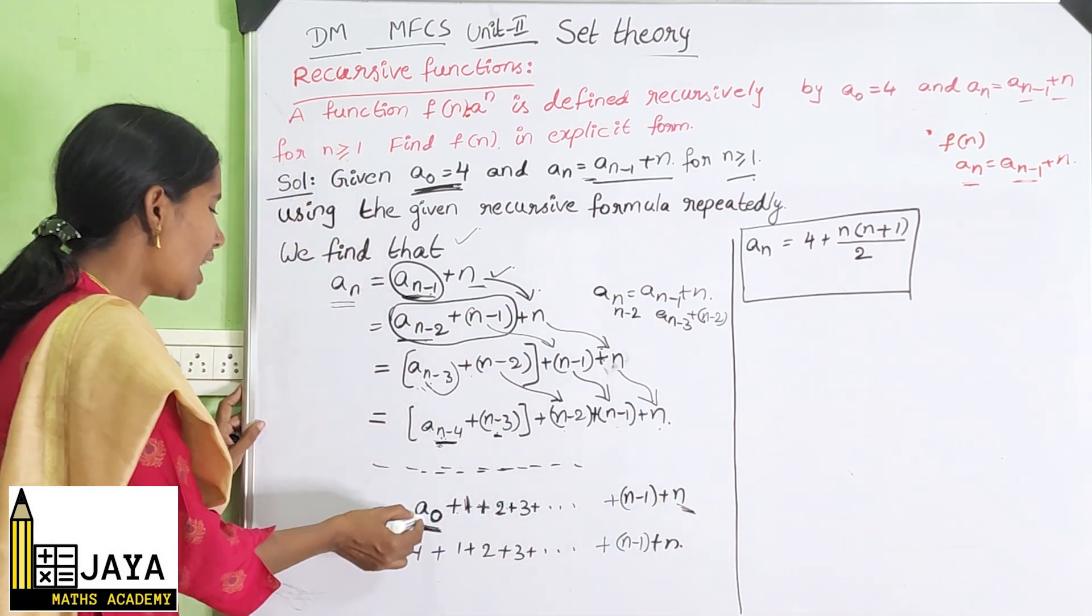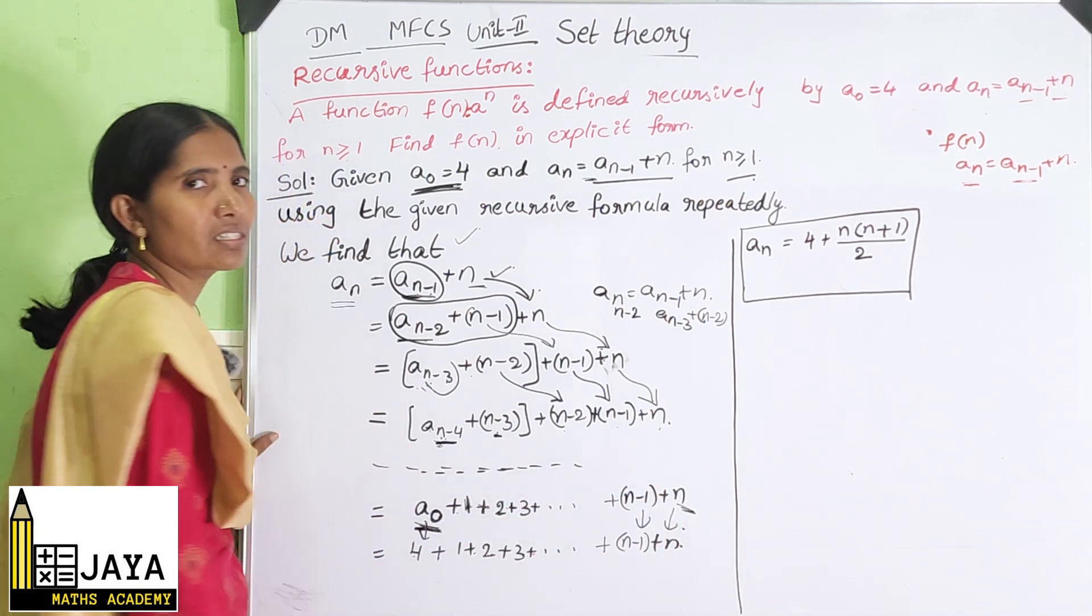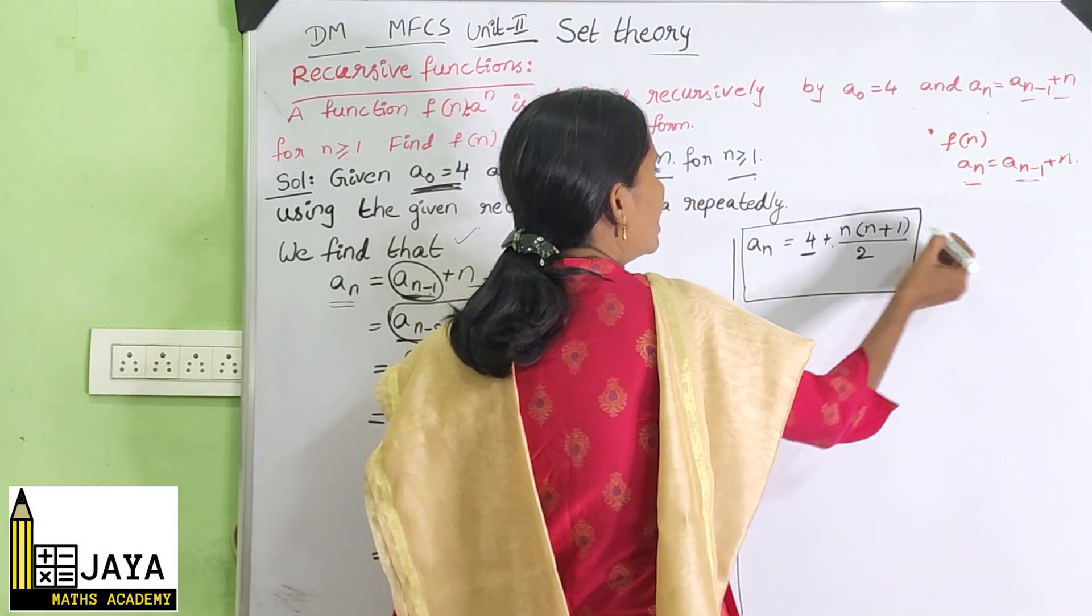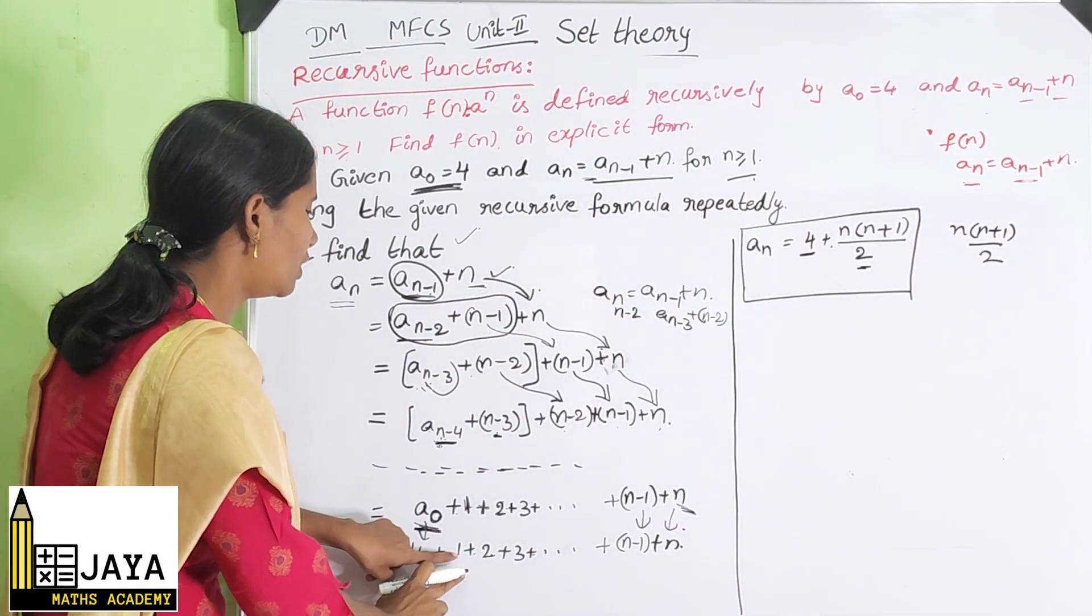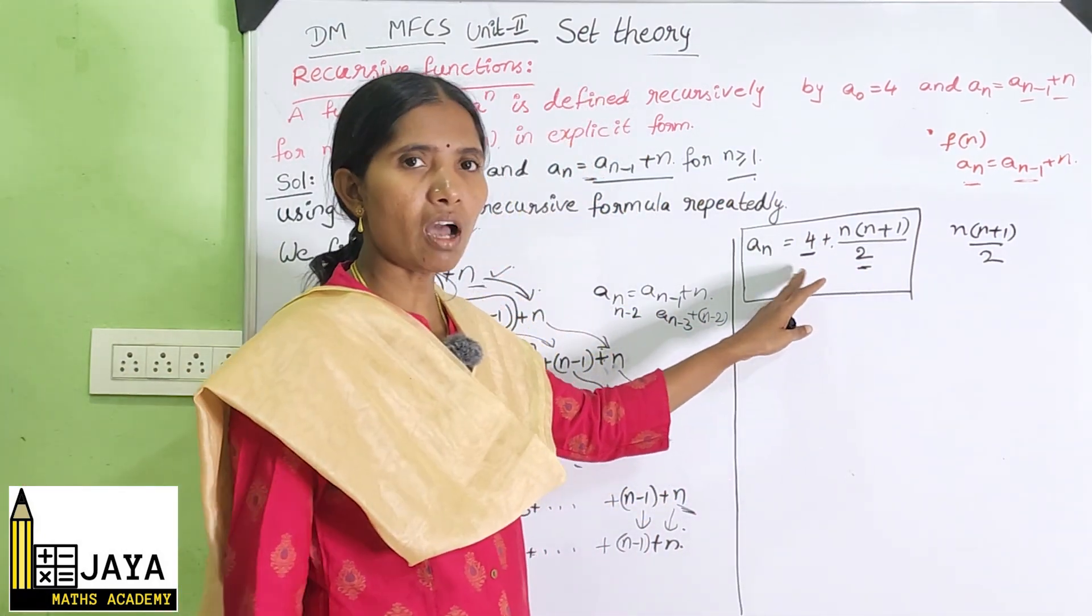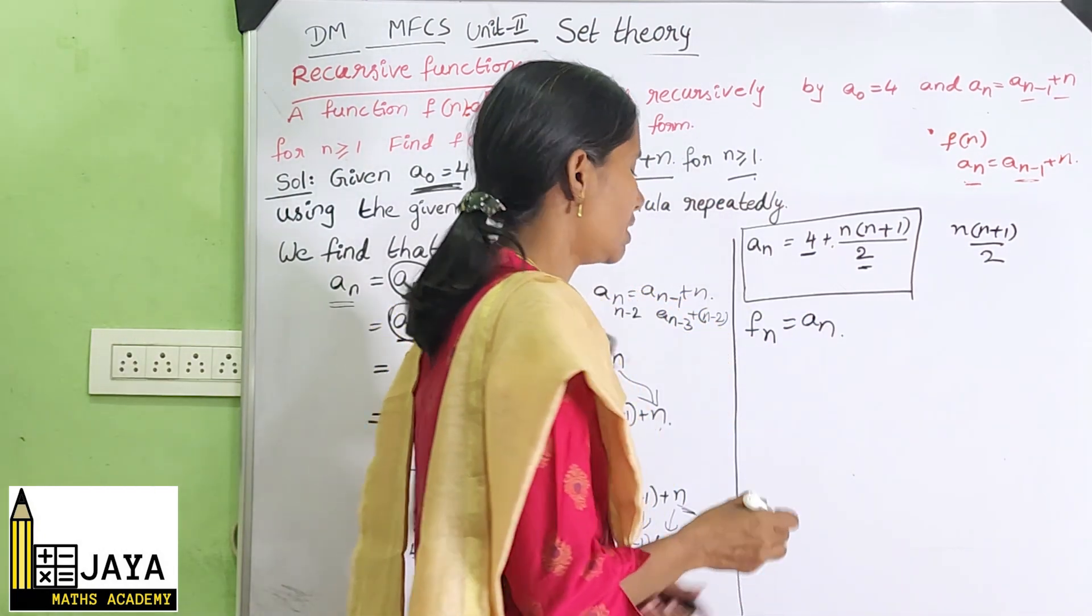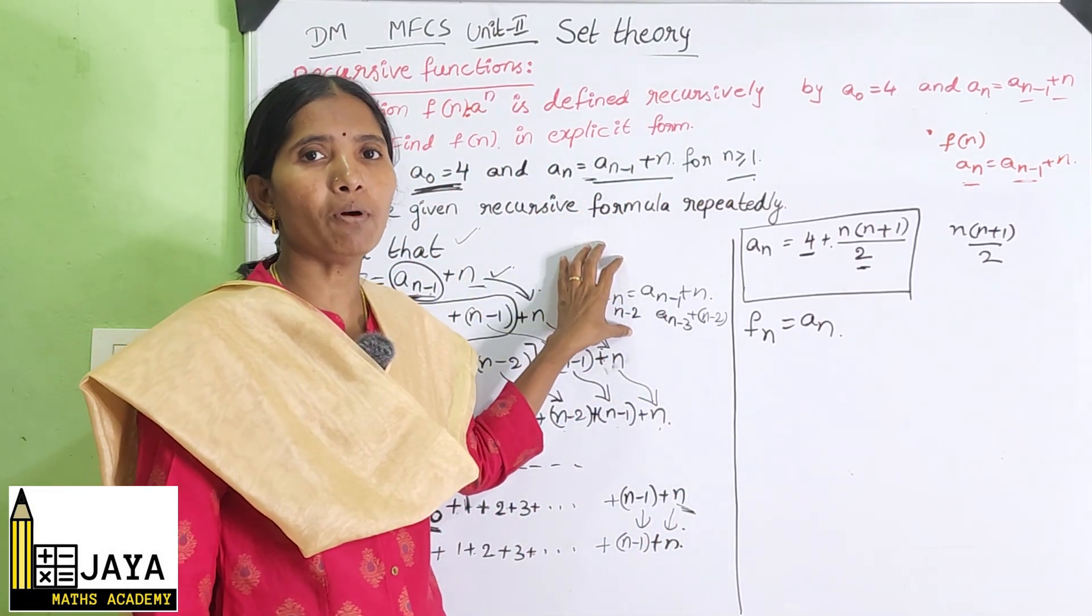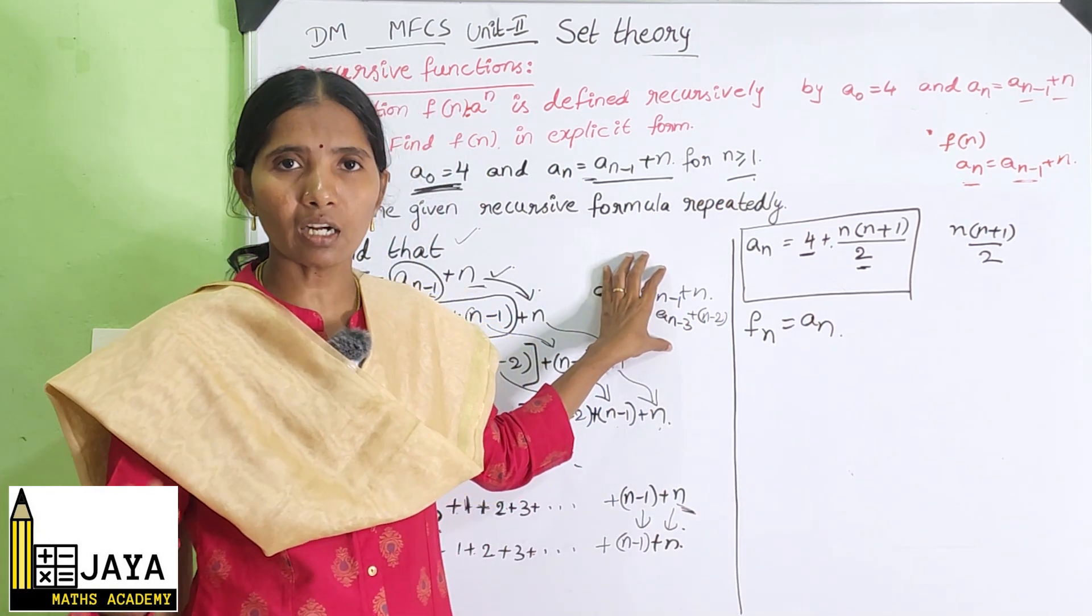Then it will come F(n) = A(n). This is the function form, so that it is the solution of this problem. This problem is recursive relation, important problem. You solve this problem. If you have doubts, don't hesitate.